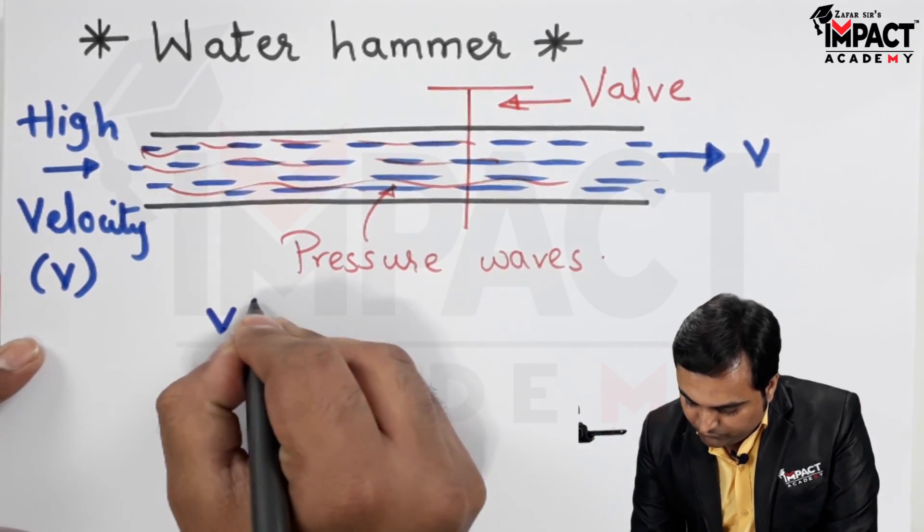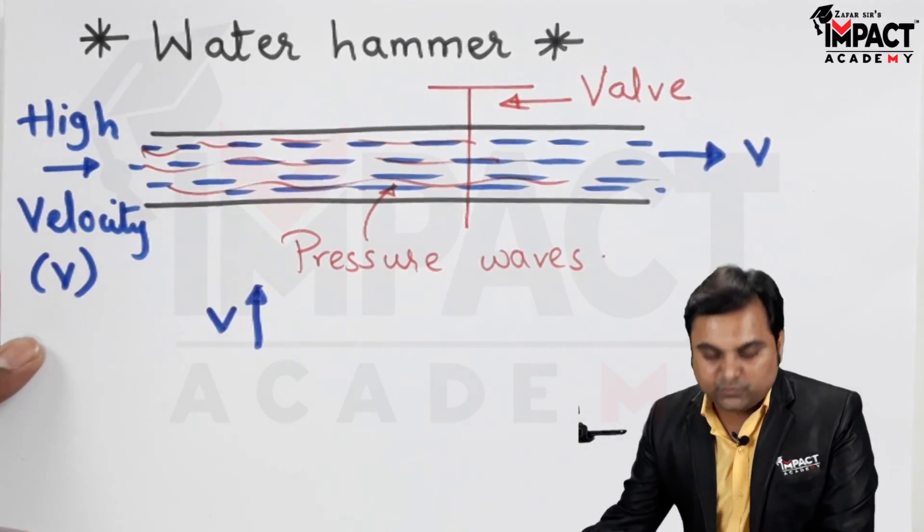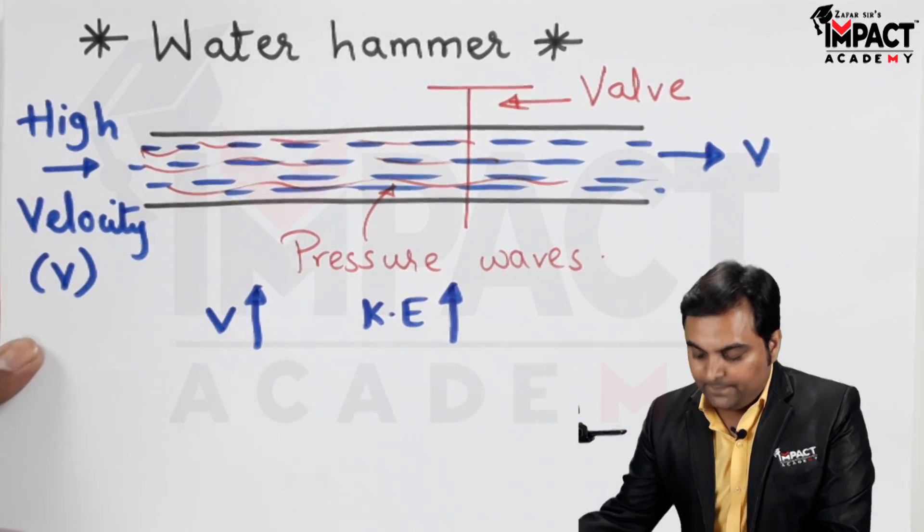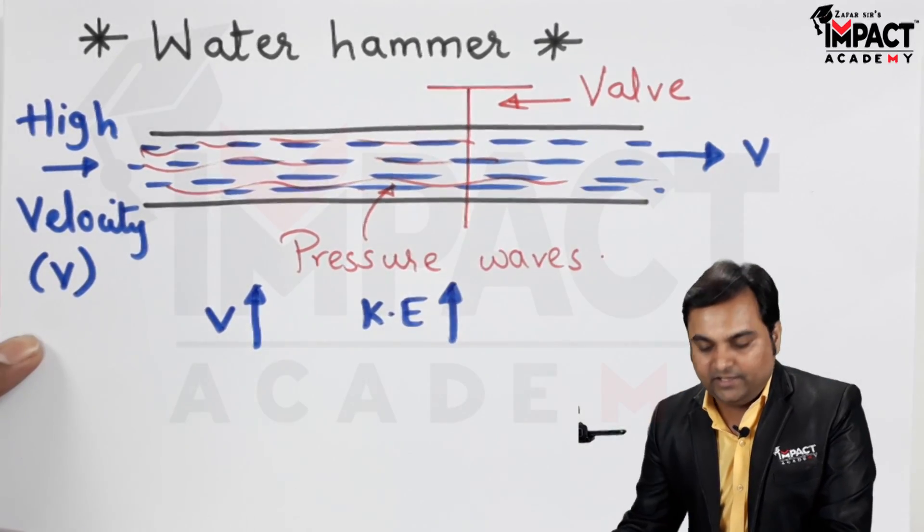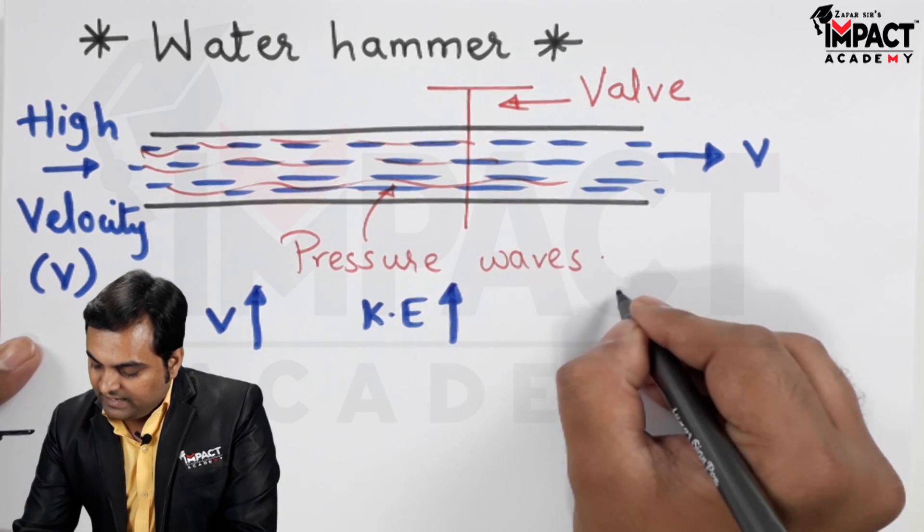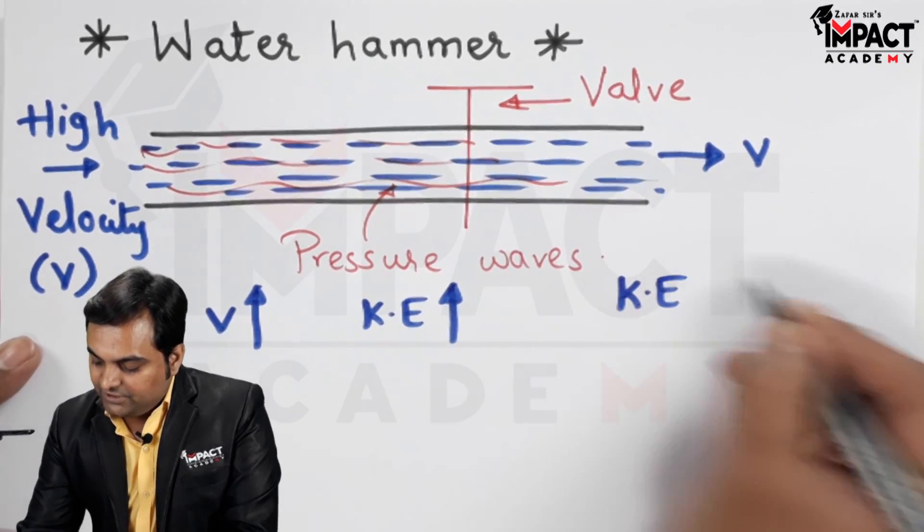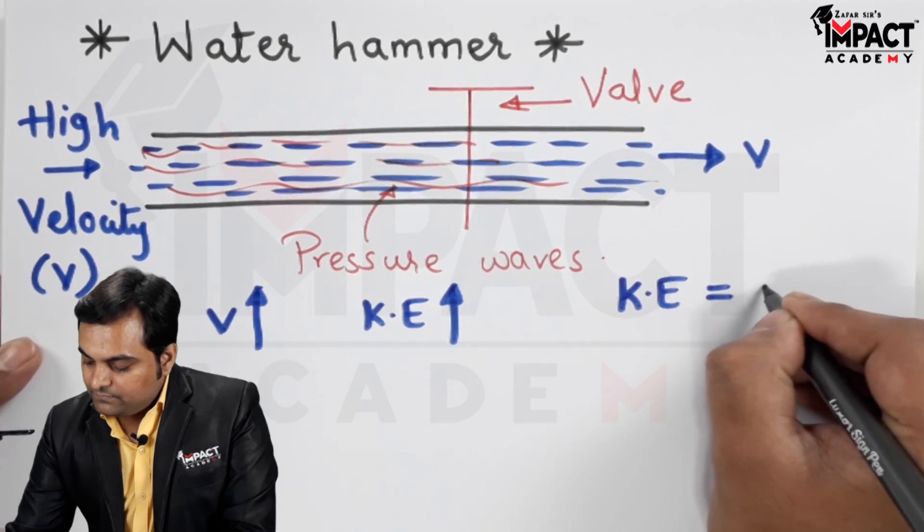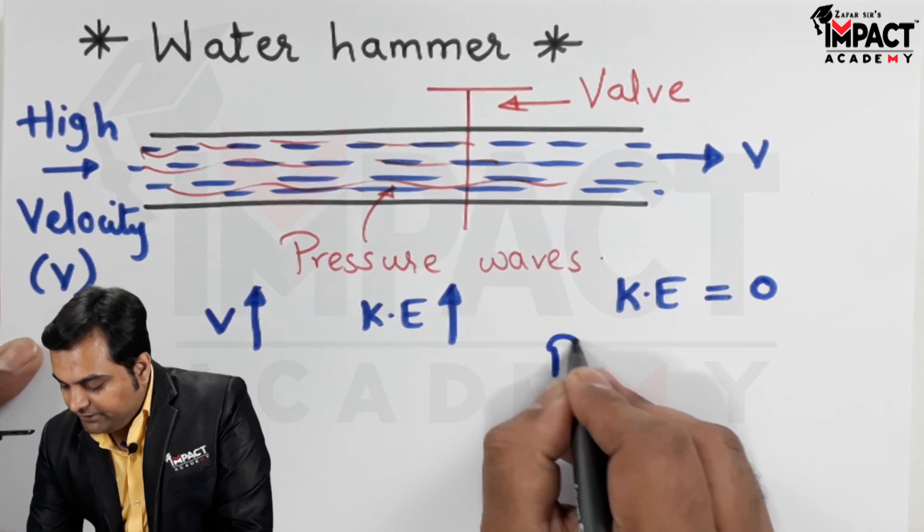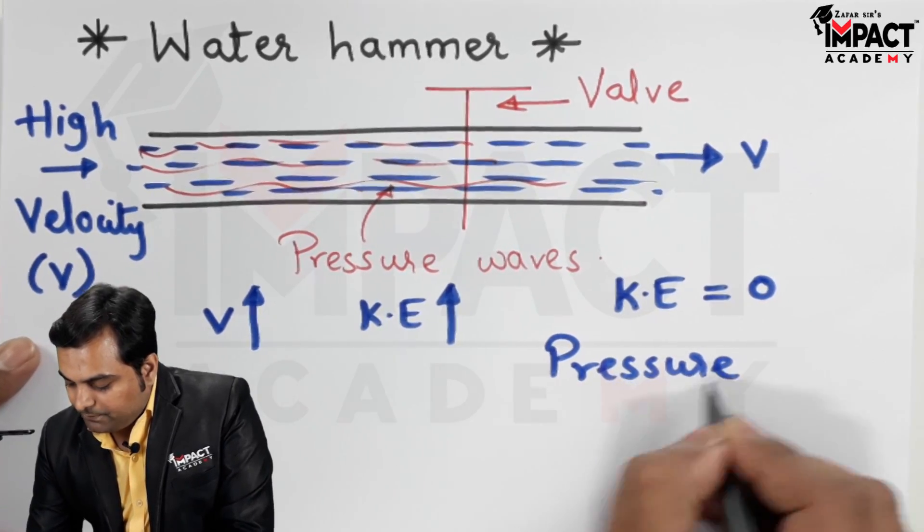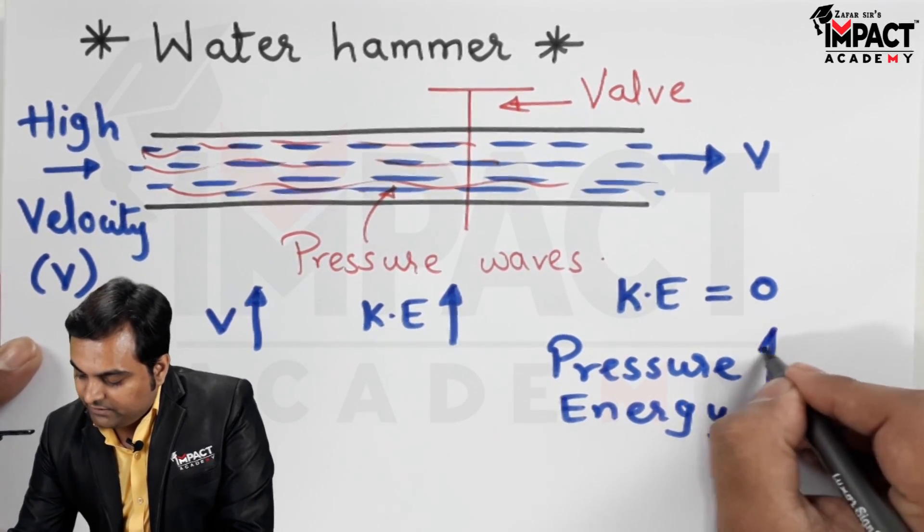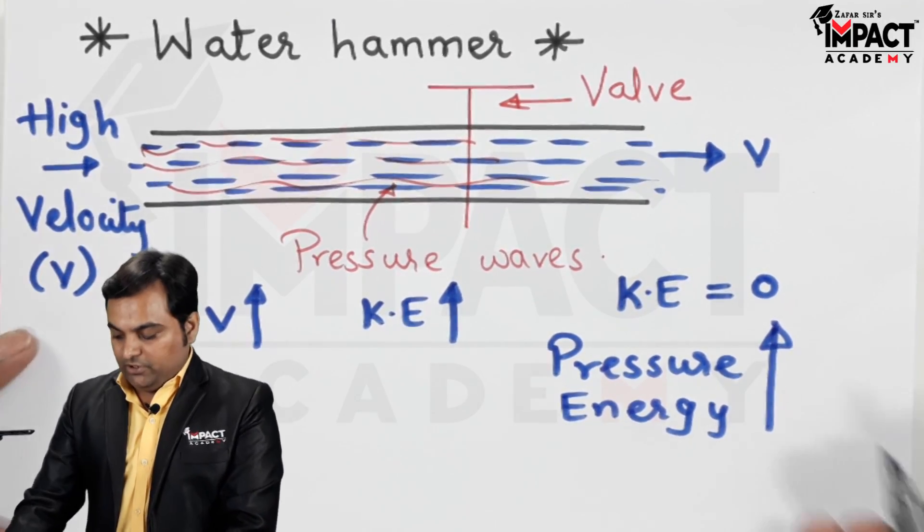So here I can say that the velocity of the fluid, that is water, is very high, so even the kinetic energy is very high. And if it is stopped suddenly by closing this valve really quickly, then in that case the kinetic energy would become zero and entire kinetic energy would be transferred into or converted into the pressure energy.